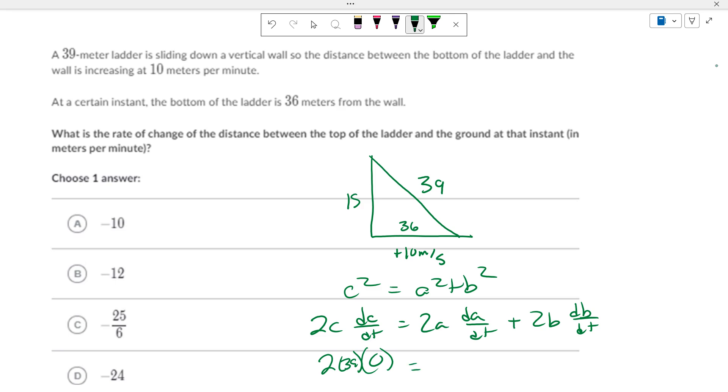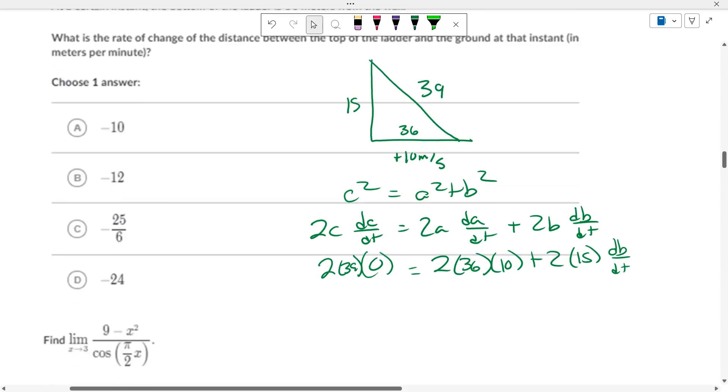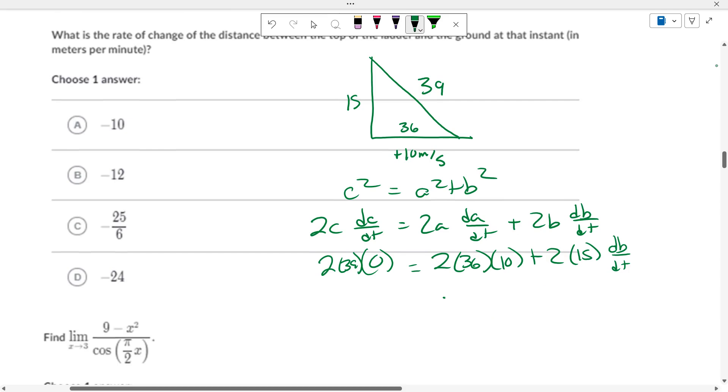plus 2 times 15 times db/dt. 2 times 36 times 10 is 0 equals 720 plus 30 db/dt. Negative 720 over 30 is db/dt. So, it's like negative 24.